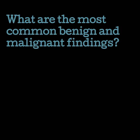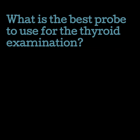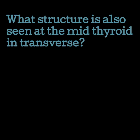What are the most common benign and malignant findings? Adenomas and colloid cysts make up the common benign findings, while papillary cancer is the most common malignancy. What is the best probe to use for the thyroid examination? You'll want to use a high-frequency linear probe, usually around 12 to 17 megahertz. What structure is also seen at the mid-thyroid in transverse? The isthmus — it really gives us our landmark for finding the bulkiest mid portion in transverse. However, we can also see many other structures in the neck, such as muscles, vessels, and the esophagus.